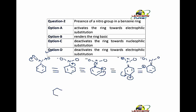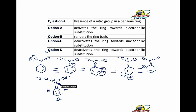The ring is deactivated. The presence of groups like nitro, aldehyde, COO, or cyanide groups deactivates the ring towards the electrophilic substitution reaction. Now let's take up our next question.